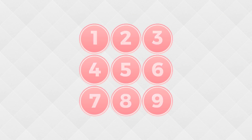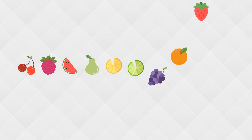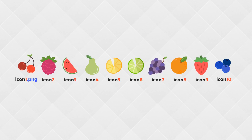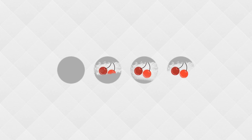I've also created 10 different fruit icons and named them icon1.png through icon10.png. It's important to note that the cherry is icon1. I also have four scratch images. When the game starts you'll see nine silver circles. If the user selects a circle, the scratch image will animate to make it look like you're scratching off the circle.